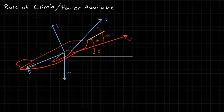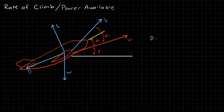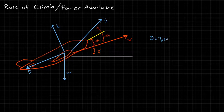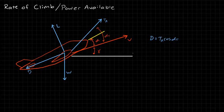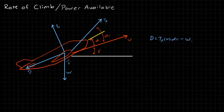Let's do a force balance. If we sum the forces in the direction of drag, then our drag has to equal the thrust available times the cosine of the thrust angle, cos(α_t), minus a component in the weight direction. This angle is the same as the climb angle, so this is minus W·sin(γ).